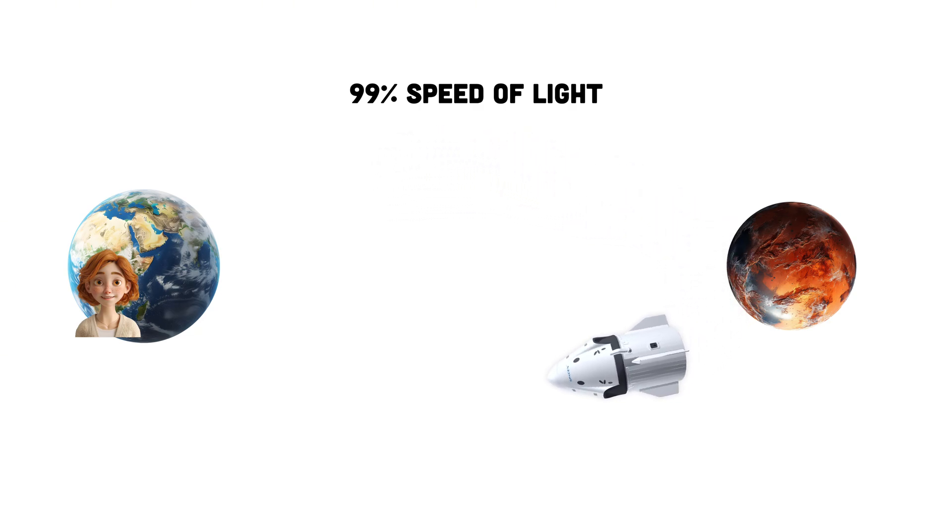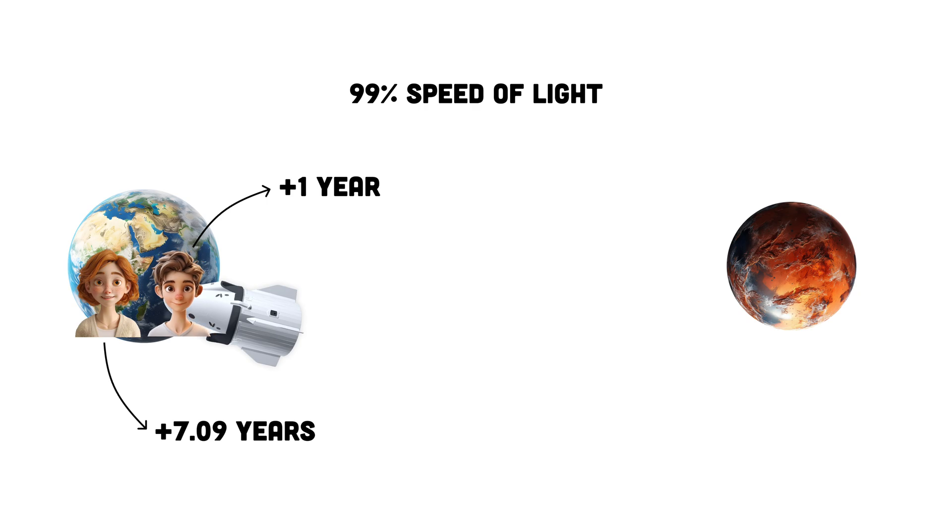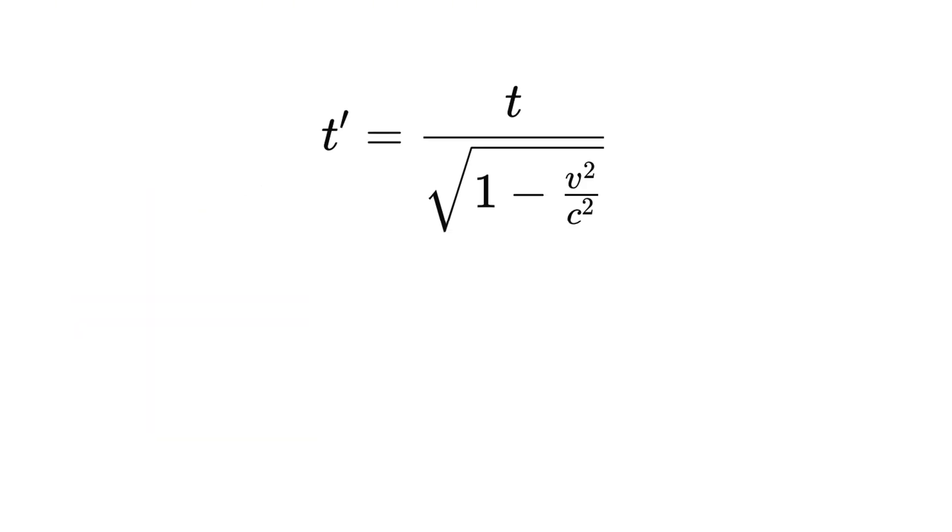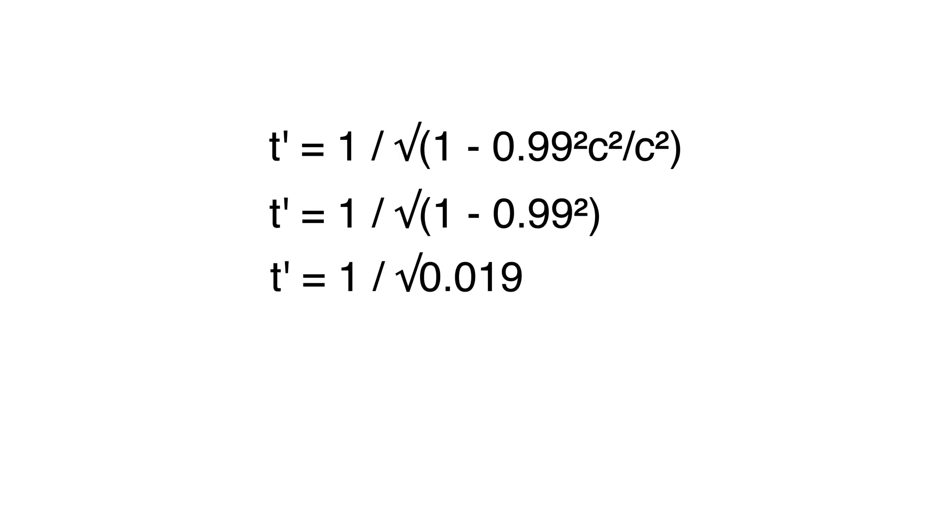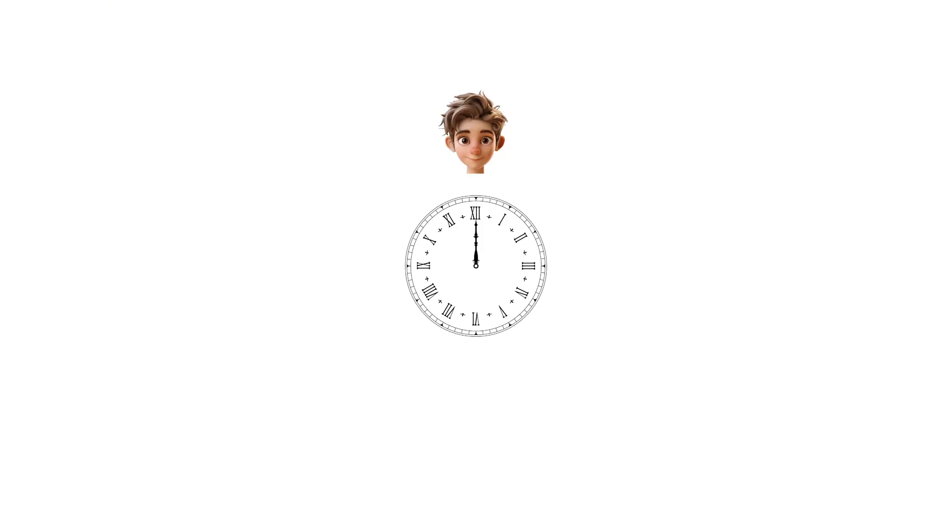Bob makes the round trip and returns to Earth after what he experiences as one year. When he steps out of his spaceship, seven years have passed for Alice. Let's break down the math real quick. One year is the time experienced by Bob on the spaceship. 99% the speed of light is Bob's velocity relative to Alice. Solving for the time experienced by Alice on Earth, we get approximately 7.09 years.